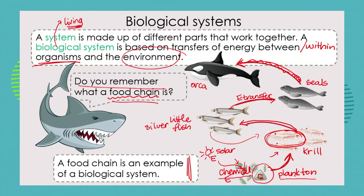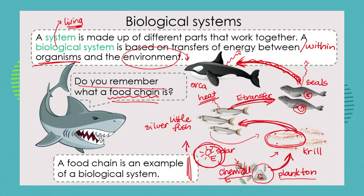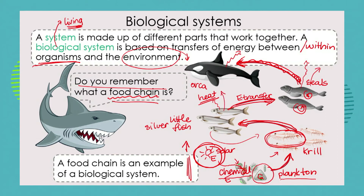So we see energy transfers within the system from object to object, but also energy transfers within the objects in the system. There is also a form of wasted energy — each of these organisms generates heat, and that heat is dissipated into the environment. The amount of energy we started with is far greater than what we end up with, not because the energy was destroyed, but because some has been lost to the environment as heat.